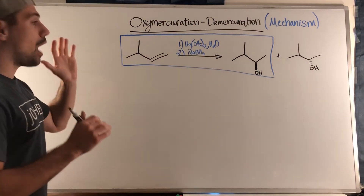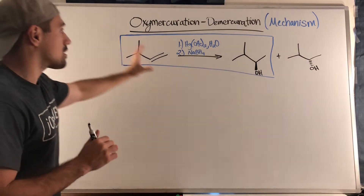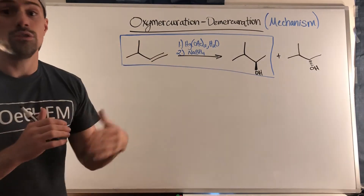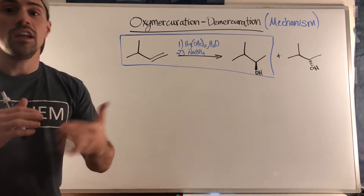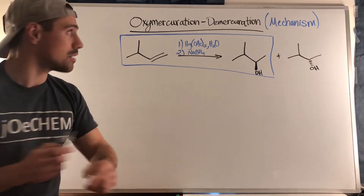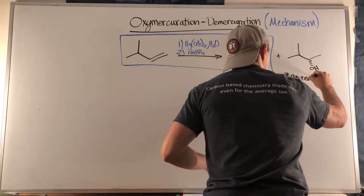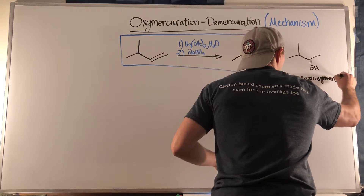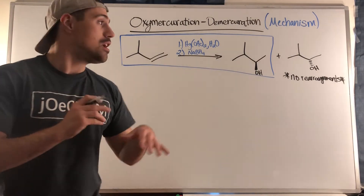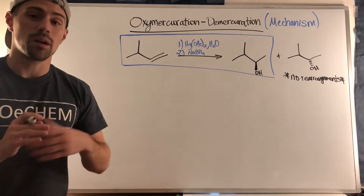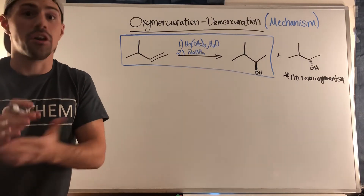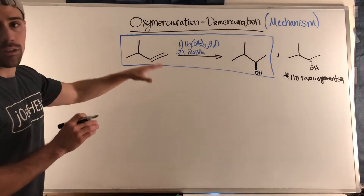I want to walk through the mechanism of the oxymercuration-demercuration reaction. Remember, with this reaction we do a Markovnikov addition of water — we're sticking on an OH, or in some cases something slightly different. The key point: no rearrangements. Unlike when we protonate a double bond and make a carbocation, we do not see any methyl or hydride shifts. Wherever the more substituted carbon is in the double bond, that is where you add your OH.